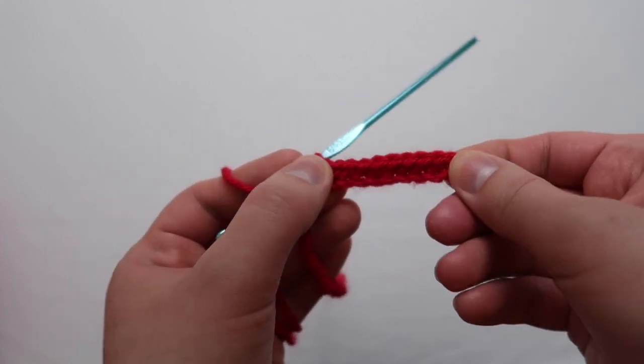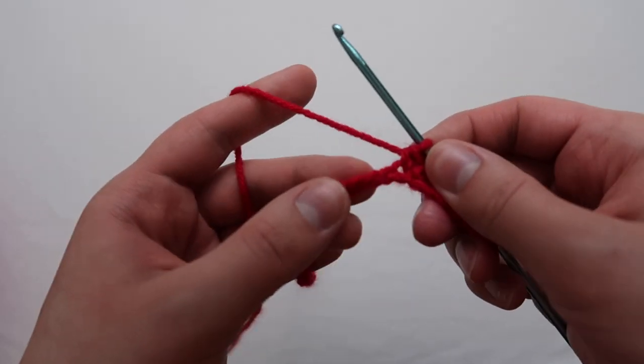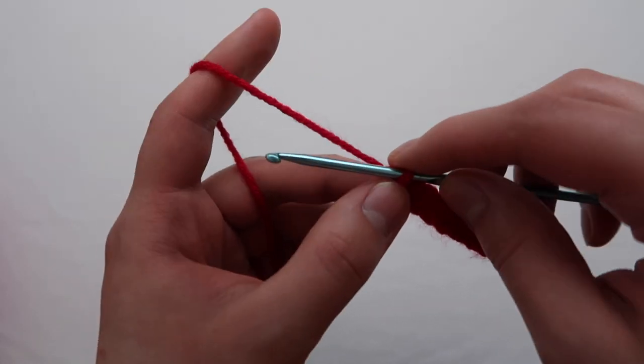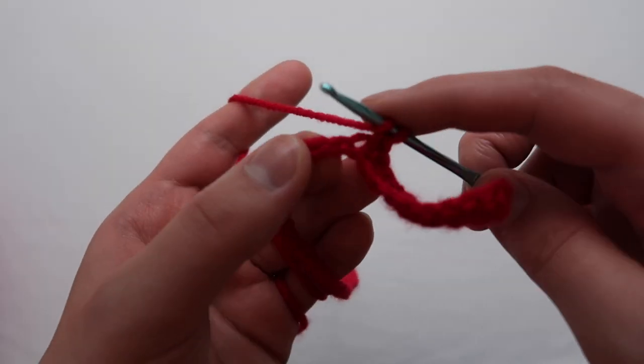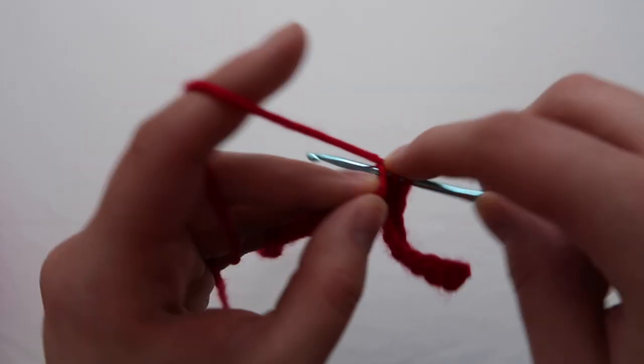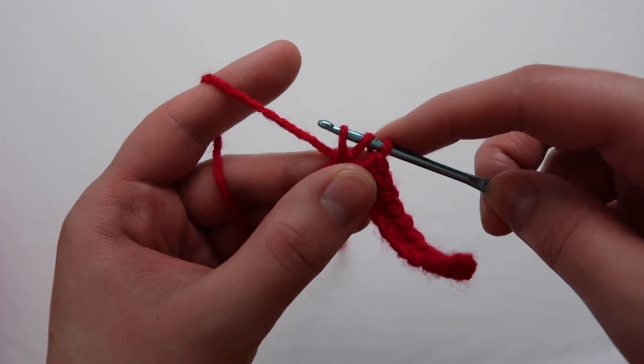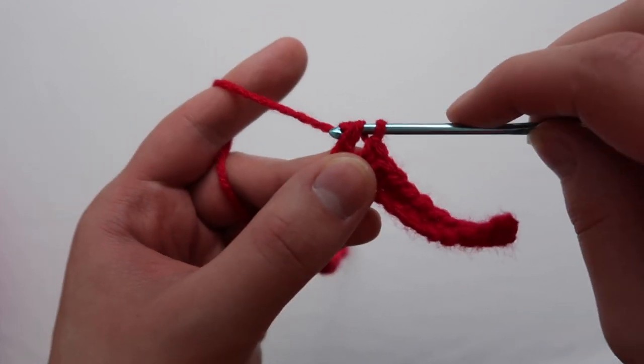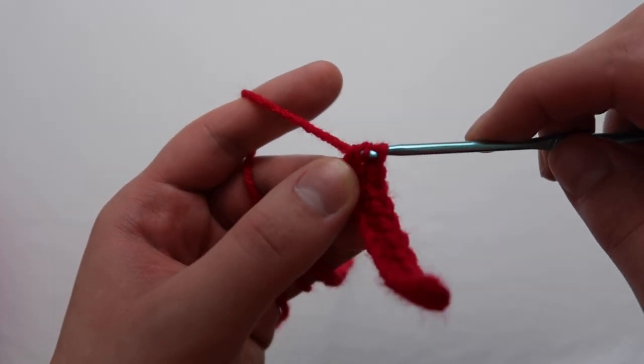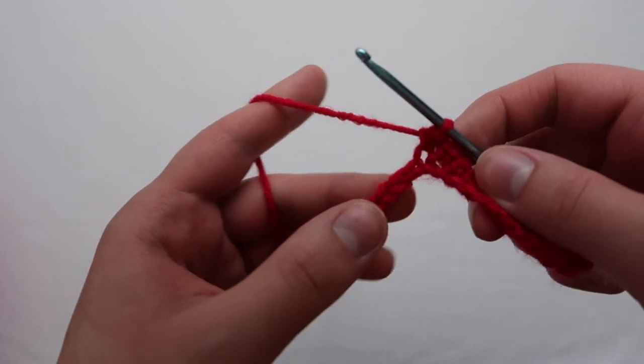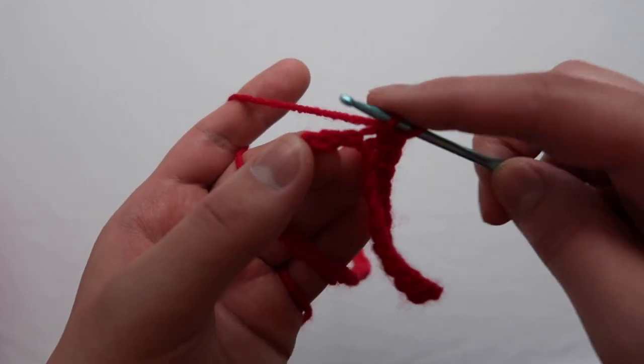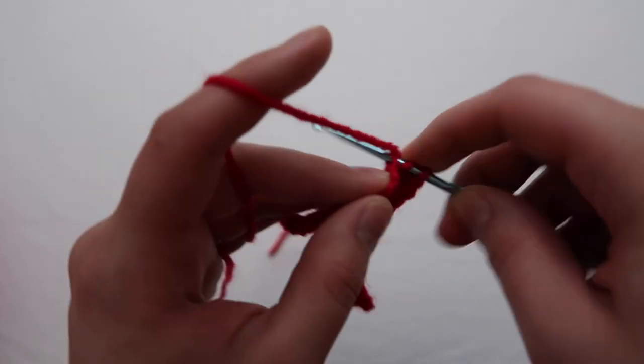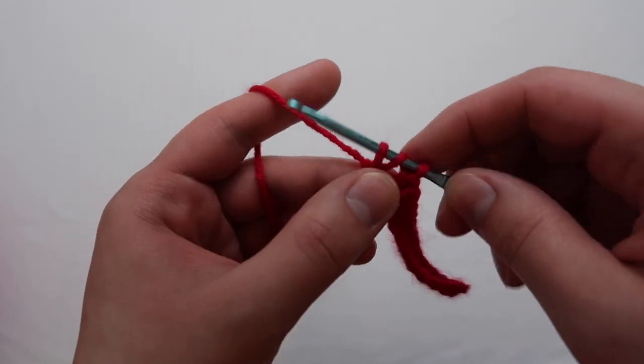After your 10 single crochet, we're going to do half double crochets. First you wrap the yarn around the hook, then you pull up a loop and you're going to go through all three loops that are on your hook. It's similar to a single crochet except you wrap the yarn around your hook before you go into the chain. You're going to want five half double crochet.